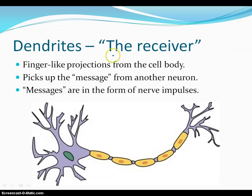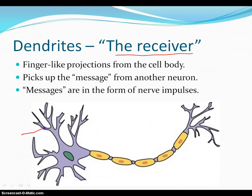Next I want to talk about dendrites. You can think of those as the receivers — they are little finger-like projections from the cell body. They pick up messages from other neurons, and those messages are in the form of nerve impulses. So each one of these little finger-like projections right here is a dendrite. It has the ability to pick up nerve impulses or messages from other neurons and decide what we want to do with that.